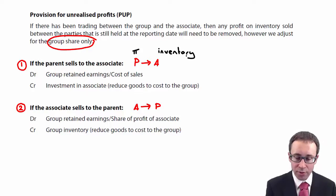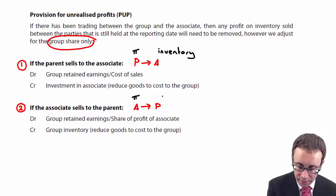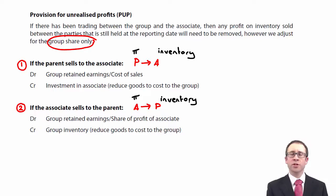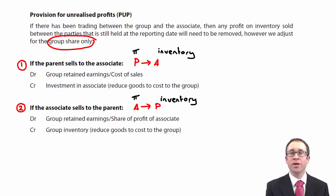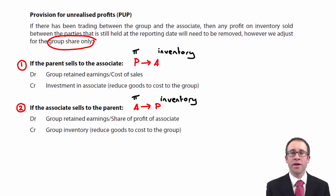In a similar fashion, if we look at the scenario where A sells goods to P, then A has the profit and P has the inventory. So we're looking to credit the year-end inventory. Here we can credit the inventory on the inventory line within the group accounts, because P owns the inventory and P's inventory would have been consolidated within the group accounts.